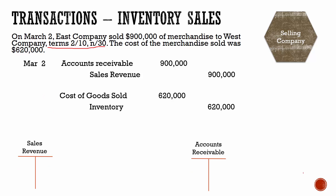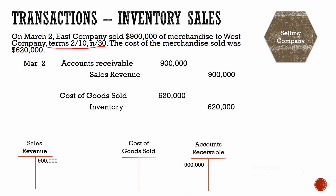We can see we have our sales revenue and our accounts receivable — both reflect the sales price of our inventory. And our cost of goods sold is increasing while our inventory account is decreasing.